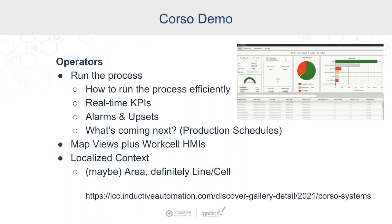For operators, they're more focused on running the process on the plant floor, so they need to operate their equipment efficiently. We're typically giving them real-time KPIs and, as Mara talked about, looking at alarms and process upsets. They may also be looking at production schedules and what's coming next to make sure they have the right raw material and product on the line. This is where map views work well to show line-level and multiple pieces of equipment in one spot, as well as individual work cell HMIs — panel views and panel-mounted PCs at the machine — and they're looking for localized context at the line and cell level.